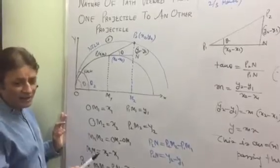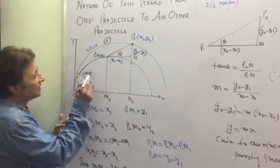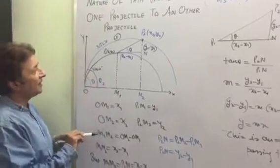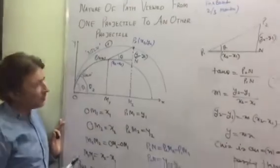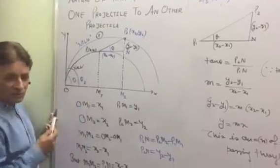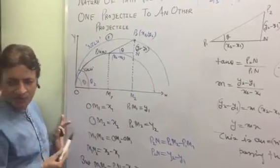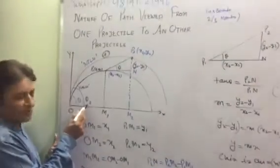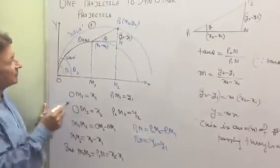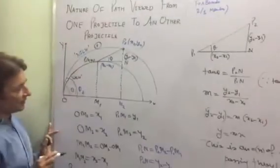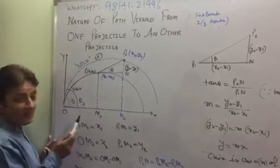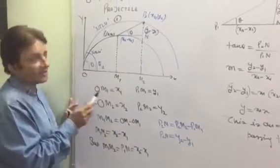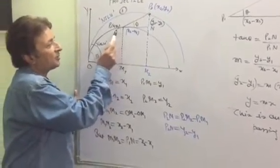There are two projectiles. For fun's sake, I have given names: one is Carl projectile and the other is Nilu projectile. These are two fictitious names which have been projected at angle theta1 and theta2. At any instant, the Carl projectile is at position (x1, y1).